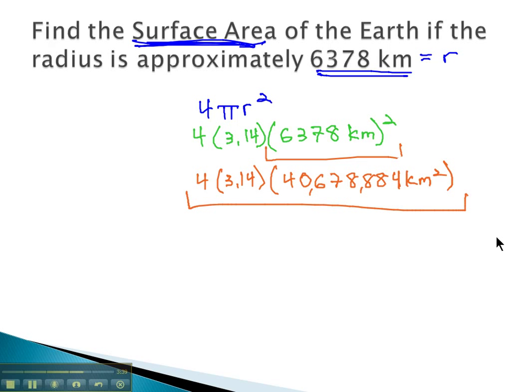And then we just have to multiply straight across. 4 times 3.14 times our big number, and we end up with the surface area of the Earth: 510,926,783 square kilometers of surface on the Earth.